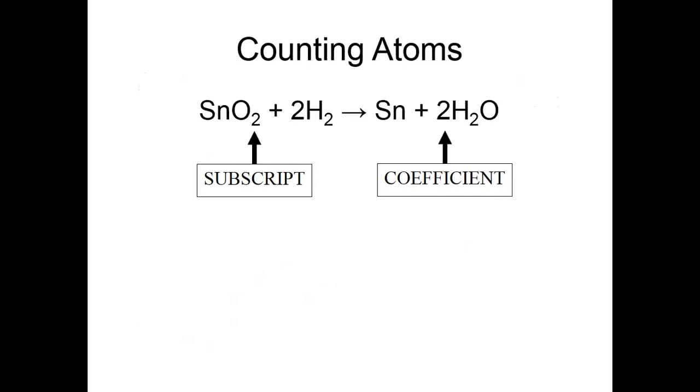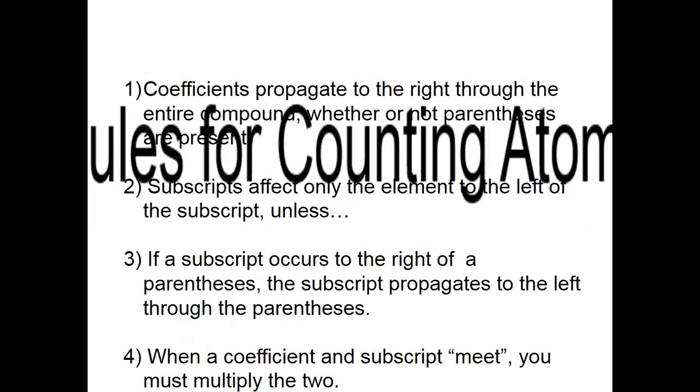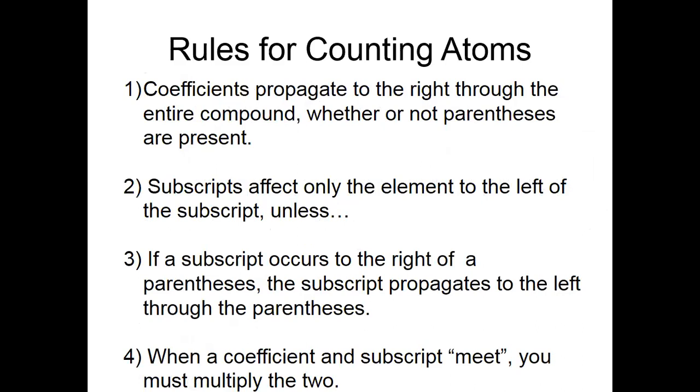Counting atoms: SnO2 + 2H2 gives Sn + 2H2O. We have two kinds of numbers - a subscript and a coefficient. Rules of counting atoms: Coefficients propagate to the right through the entire compound whether or not parentheses are present. Subscripts affect only the element to the left of the subscript, unless...